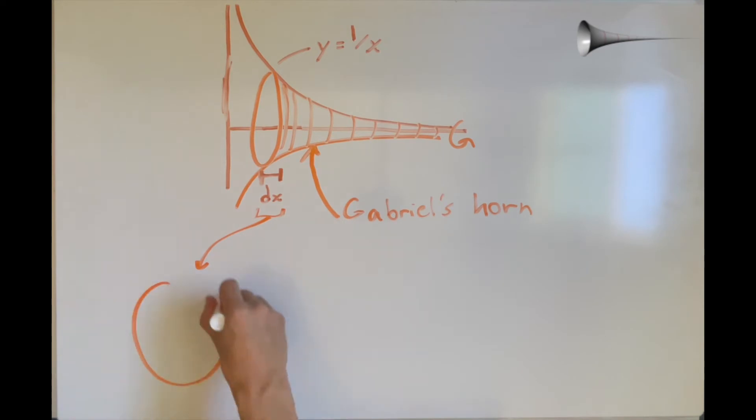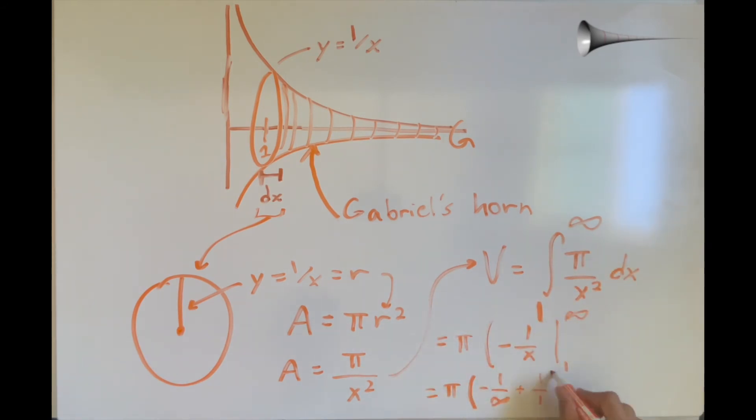The cross-section of Gabriel's horn is a circle with radius y which equals 1 over x. The area of a circle is pi r squared, so the area of any cross-section of the horn must be pi over x squared. Now, we just integrate this expression with respect to x using the limits 1 and infinity, and we find that the answer is pi.